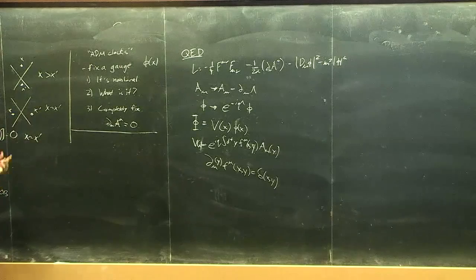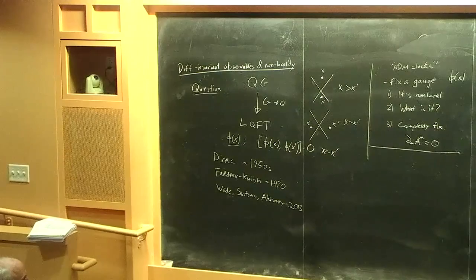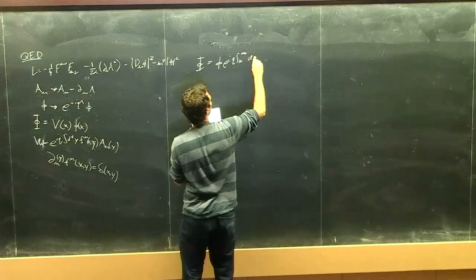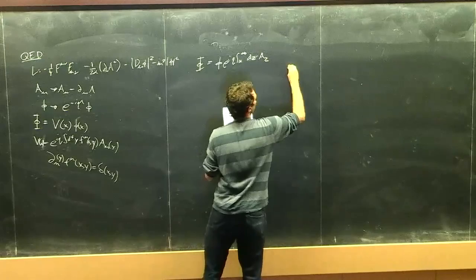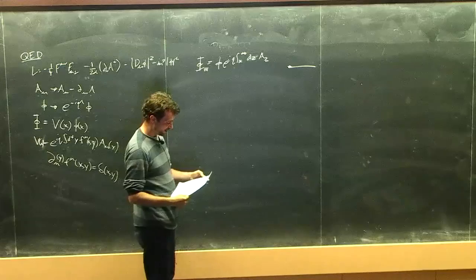There are many choices of functions that satisfy that condition. These correspond to what are sometimes called soft photon clouds that surround your operator — distinct electromagnetic fields that dress it. A particular example is the Wilson line, where you integrate along some curve, say in the z direction. That's going to be the Wilson line, or as Dirac called it, a Faraday line. That's the simplest thing you can write.